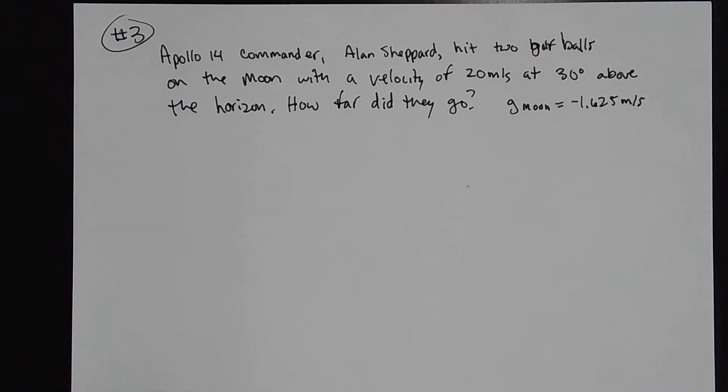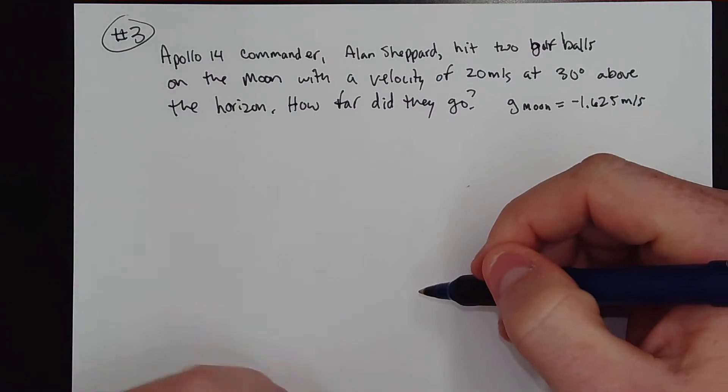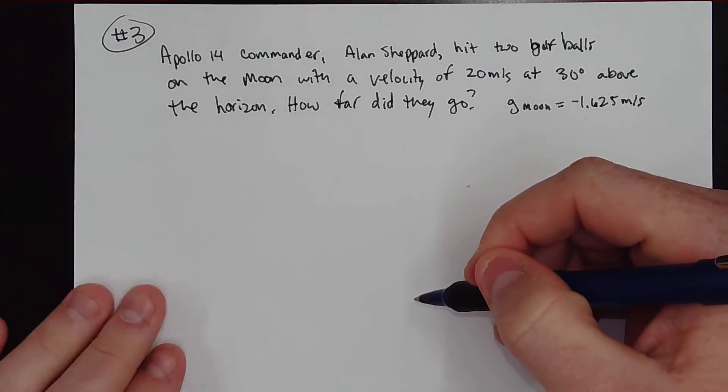Alan Shepard of the Apollo 14 mission to the moon actually did hit two golf balls on the surface, and he hit those with a velocity of 20 meters per second at about 30 degrees above horizontal. And we're going to look at how far do they actually go.